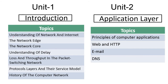In our first session we discussed the understanding of networks and the internet - what is a computer network, what is the internet, and the basics of computer networks. We also discussed the network edge and network core. Network edge means whatever components or devices are located at the boundary side, and network core means whatever components or devices are located at the central part of the network.